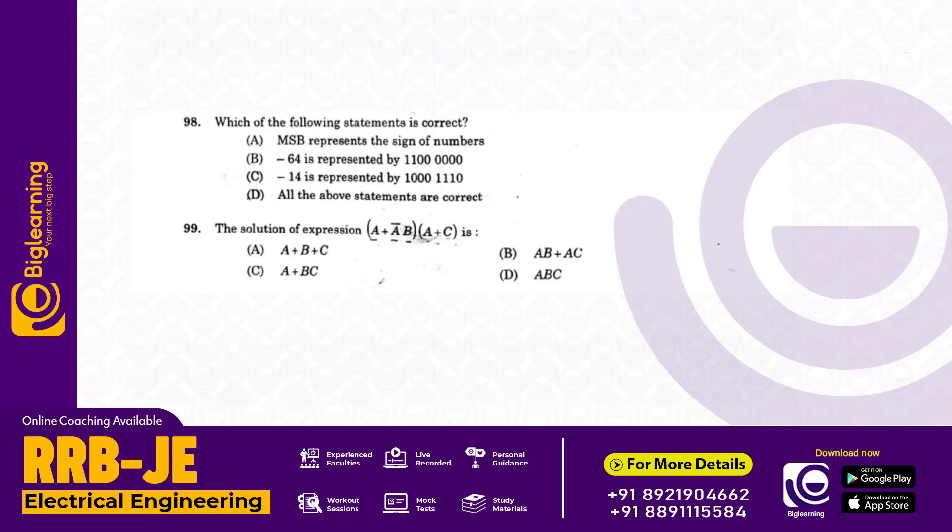Which of the following statements is correct? In MSB, the sign of the numbers 19, 64, and negative 14 are represented. All statements are correct. Answer D. Next, the solution of expression A plus A bar B into A plus C simplifies to A plus BC. Answer C.